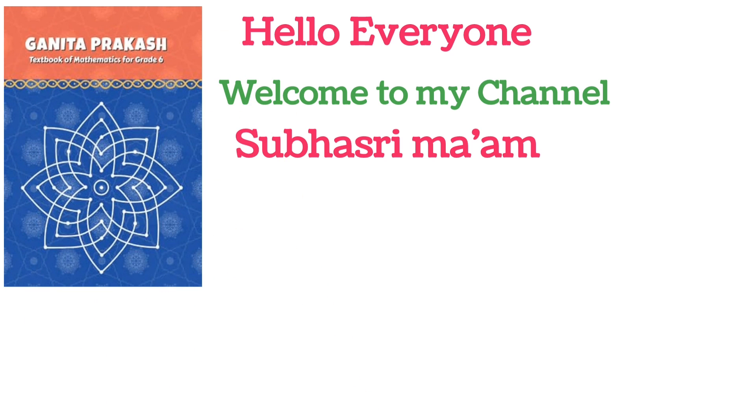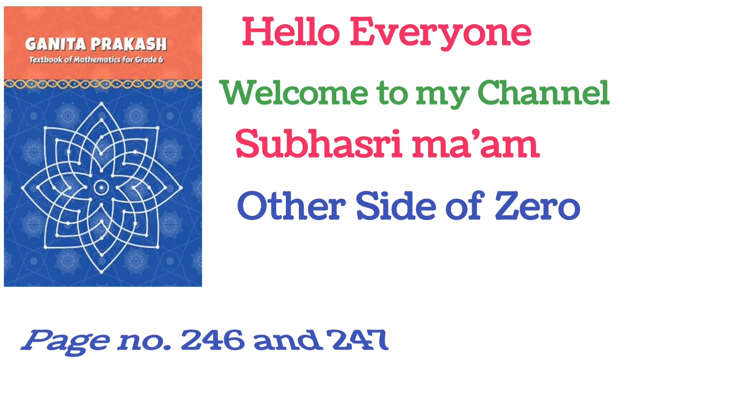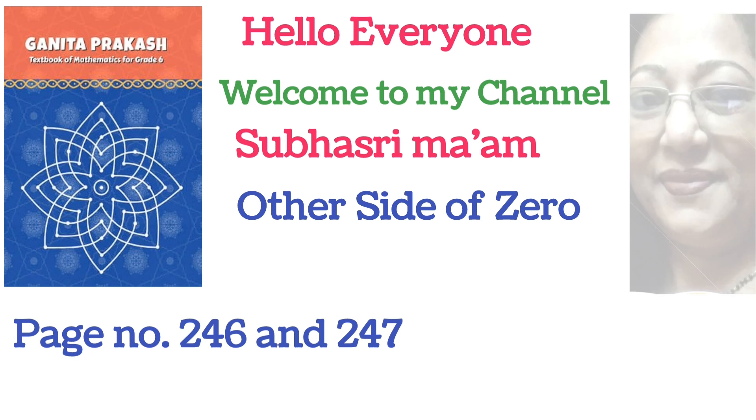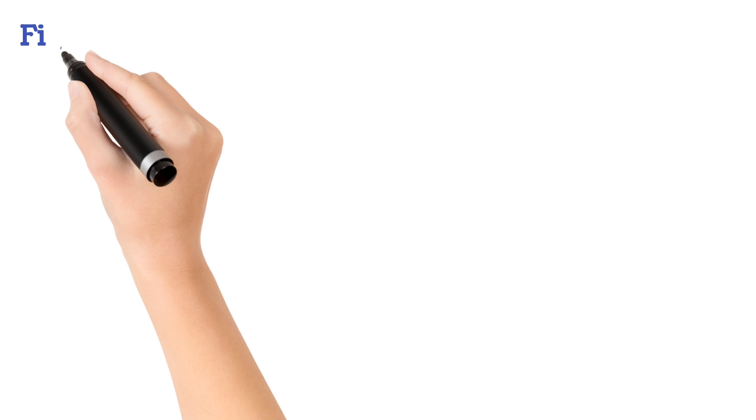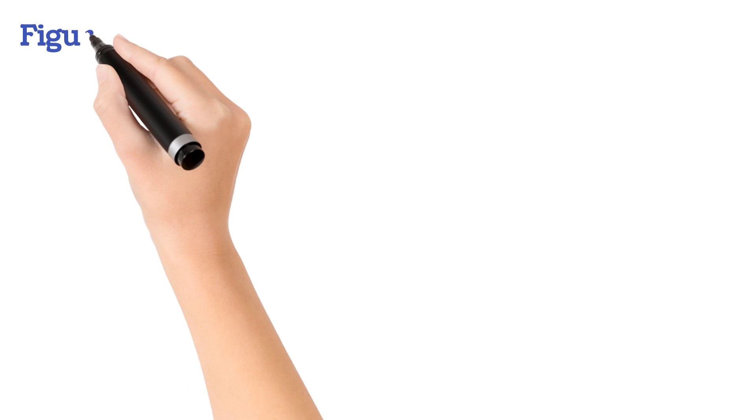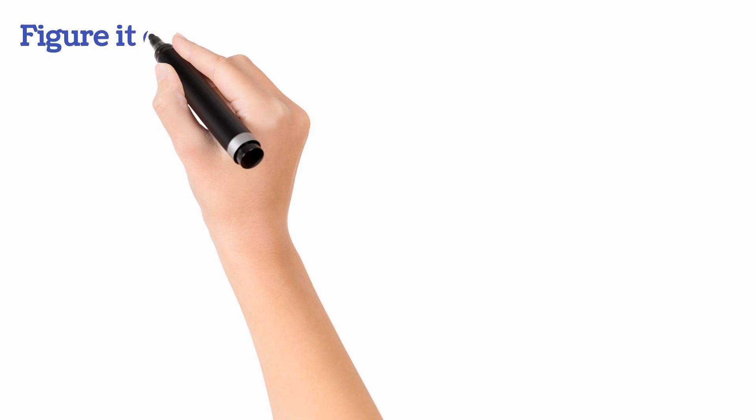Today we will solve the sums from the new book from NCERT for Class 6. We will do Chapter 10, Other Side of Zero. The last video also we did it. Those who have not seen, please you can see it and learn it. Today we will do page number 246 and 247. And the other name of other side of zero is Integer. So it is very important chapter. So do properly.